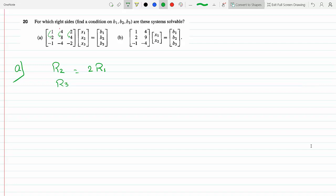And notice also that row 3 is equal row 1 times minus 1. So if I multiply row 1 by minus 1 I get row 3. So of course that has to apply on the right-hand side as well.